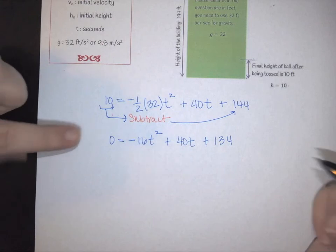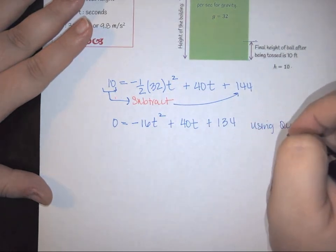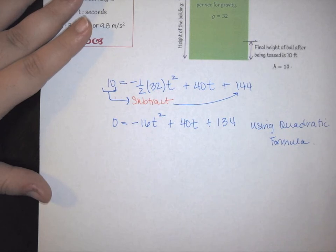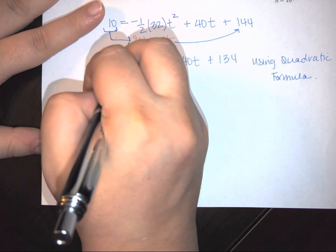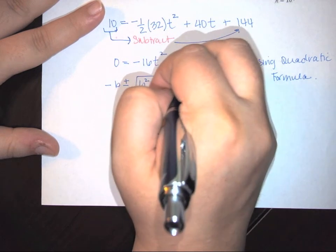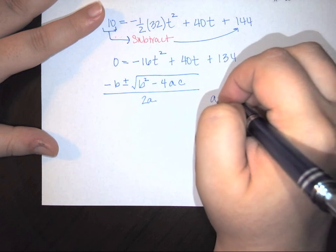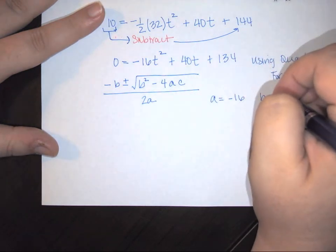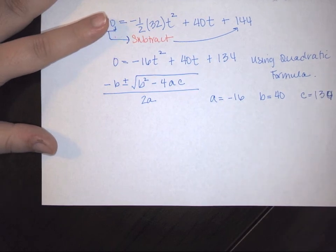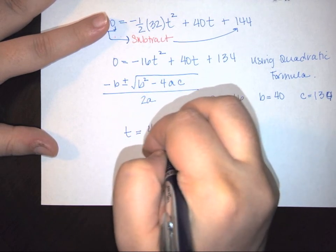Now, the biggest advice I can give in a problem like this is you want to go immediately to using your quadratic formula. So that quadratic formula, if you remember, is negative B plus or minus the square root of B squared minus 4AC all over 2A. And in this problem, we know that A is equal to negative 16, B is equal to 40, and C is equal to 134. So we're going to plug all of that stuff in and you are going to wind up with finding out that T is roughly 4.5 seconds.